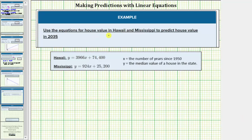We're asked to use the equations for house value in Hawaii and Mississippi to predict house value in 2035. For both equations, x equals the number of years since 1950 and y equals the median value of a house in the given state.